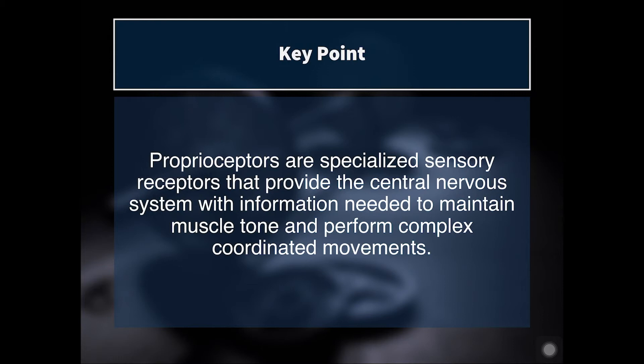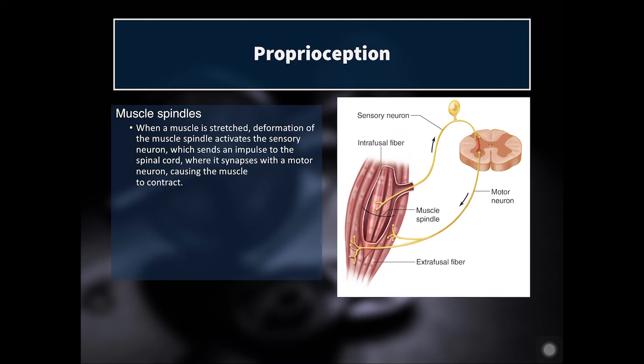Another key point: we're going to talk about proprioceptors. These are specialized sensory receptors that provide the central nervous system with information needed to maintain muscle tone and perform complex coordinated movements. When I say muscle tone, I don't mean the traditional lay term — getting toned — which actually means losing fat and gaining muscle size. What I mean is the actual resting tension in the muscle that is modulated throughout your body's movement. The first proprioceptor to talk about are muscle spindles.